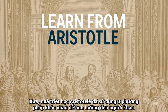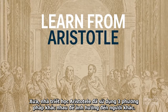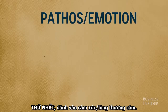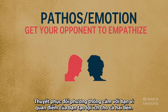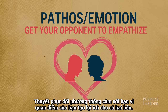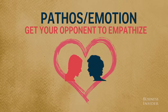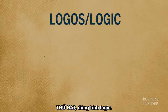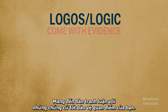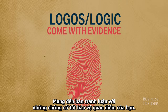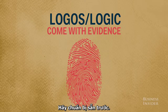Aristotle used three different methods of influence. Pathos, or emotion — you want your opponent to empathize with you, so show that your point of view will benefit both parties. Logos, or logic — come to the table with hard evidence that backs your claim. Be prepared.